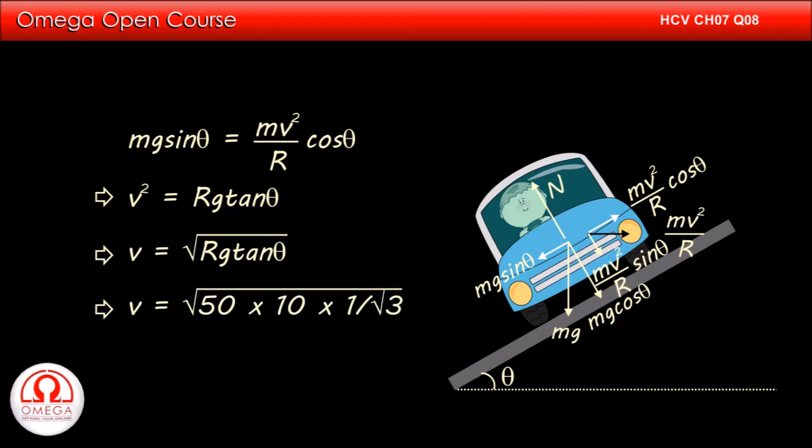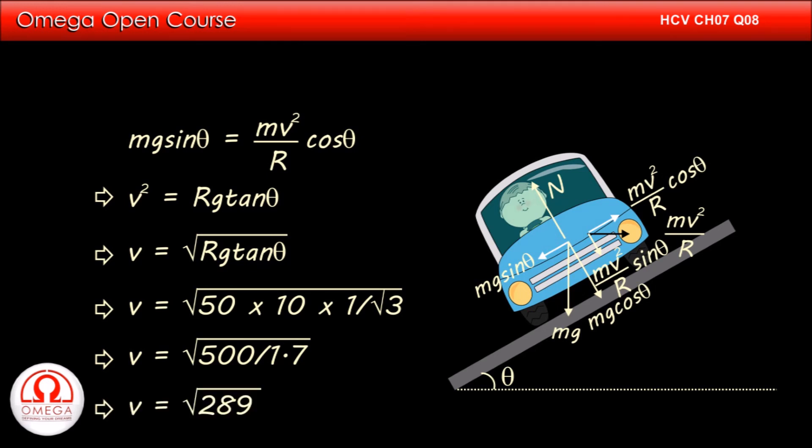Putting the values, we get V is equal to root under 50 into 10 into 1 by root 3 or V is equal to root under 500 by 1.7. This implies V is equal to root under 289 or 17 meters per second. This is our answer.